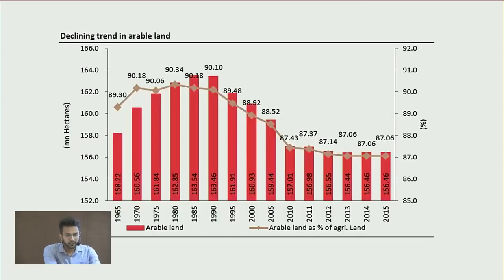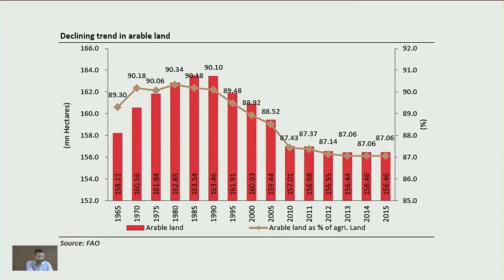Looking at total arable land where agricultural activity is conducted, the figures have come down from 163 million hectares in 1990 to 156 million hectares in 2015. This is a cause for worry as overall food requirements are increasing with population growth, and this demand needs to be met from a smaller available land base.